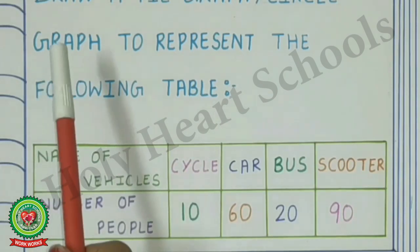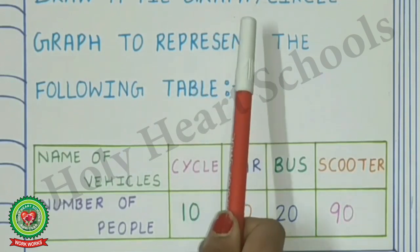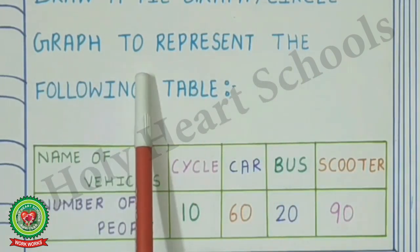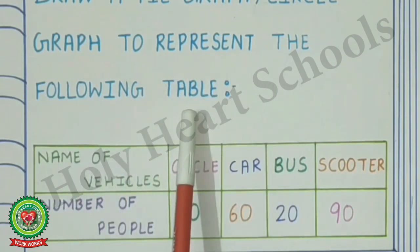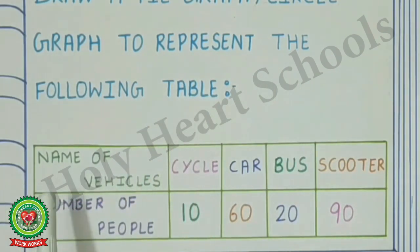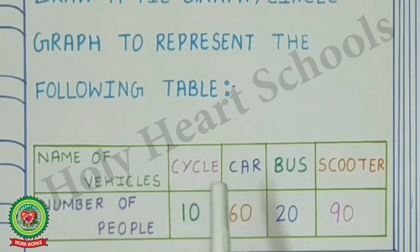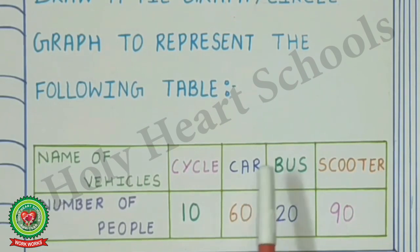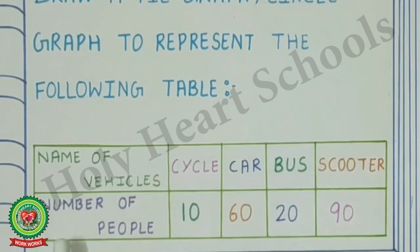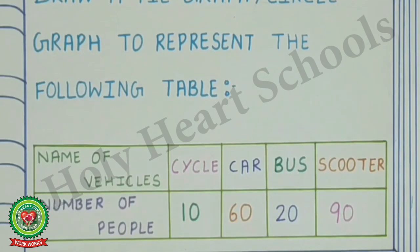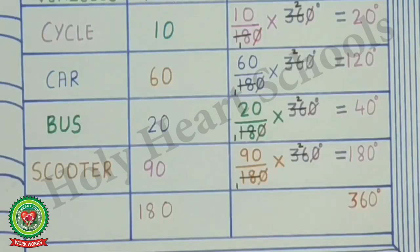Example number one: draw a pie graph or circle graph to represent the following table. In the first row we have the name of vehicles — cycle, car, bus, and scooter. In the second row we have the number of people — 10, 60, 20, and 90.